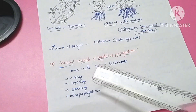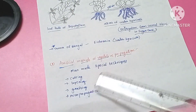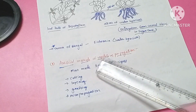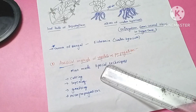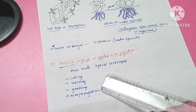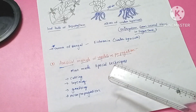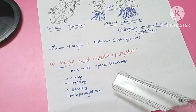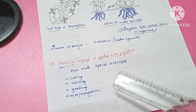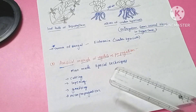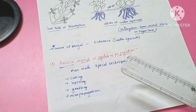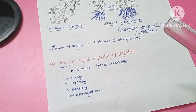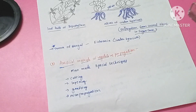So water hyacinth or Eichhornia is the Terror of Bengal. Artificial methods of vegetative propagation are man-made methods and include cutting, layering, grafting, and micropropagation. The next topic is sexual reproduction in plants.